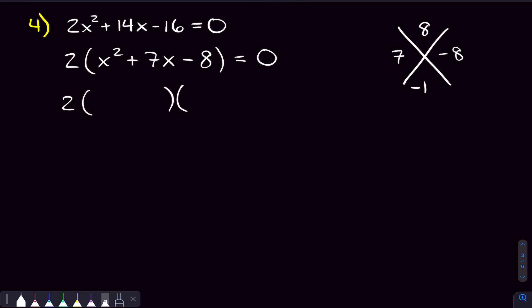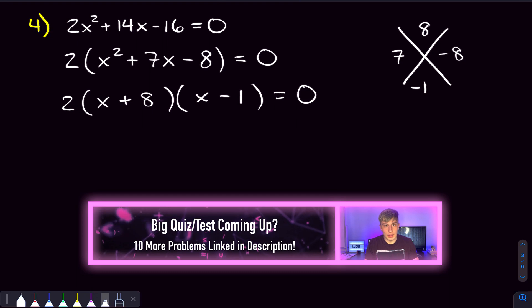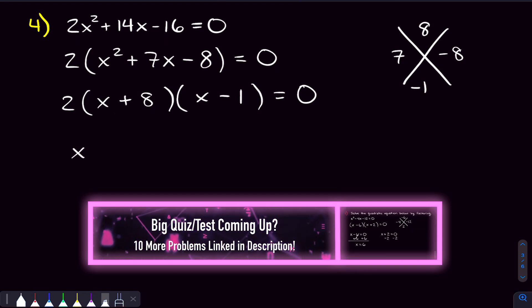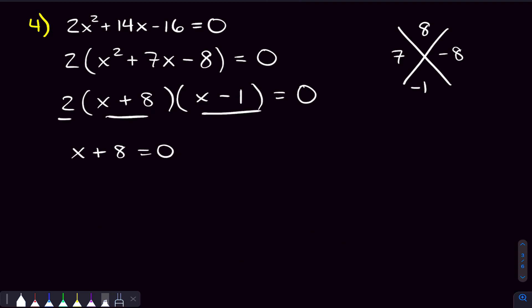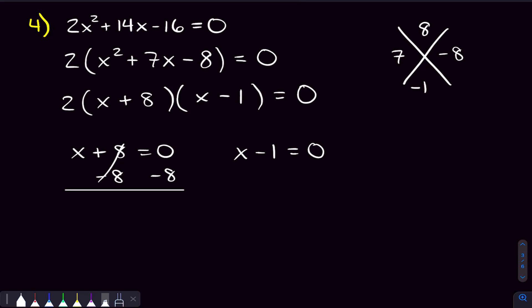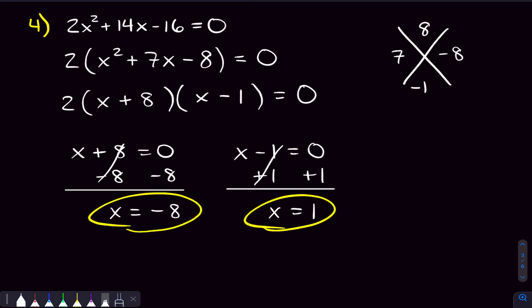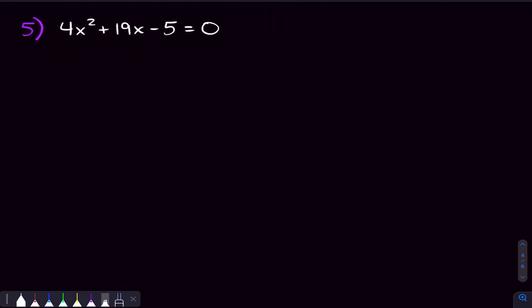We put those numbers in our factored form: 2 times (x plus 8) times (x minus 1) equals zero. Setting x plus 8 equal to zero, we subtract 8 to get x equals negative 8. Adding 1 to the other equation gives us x equals 1. Those are our two solutions.